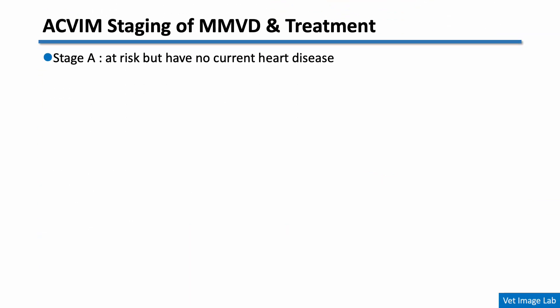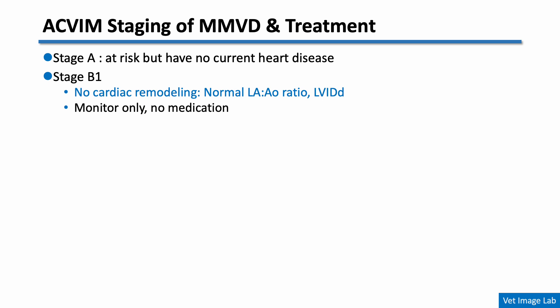The American College of Veterinary Internal Medicine, or ACVIM, provides a widely used staging system for MMVD. This system helps us determine the severity of the disease and decide when to start treatment. In Stage A, dogs are at risk but have no current heart disease. Stage B1 refers to dogs that have a heart murmur, but the left atrium and left ventricle are normal in size. At this stage, we simply monitor the patient without starting any medication.